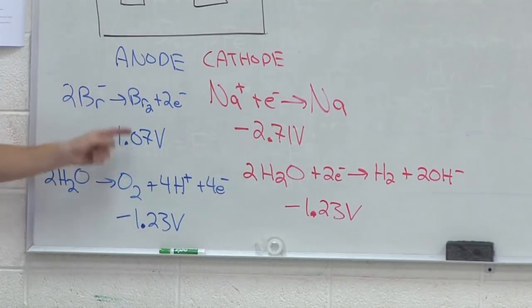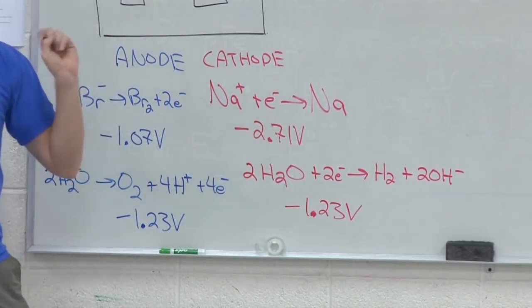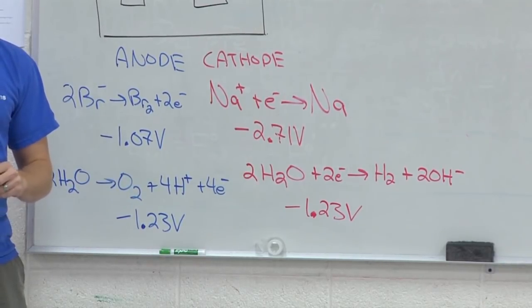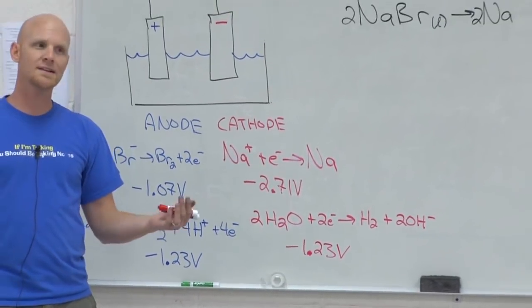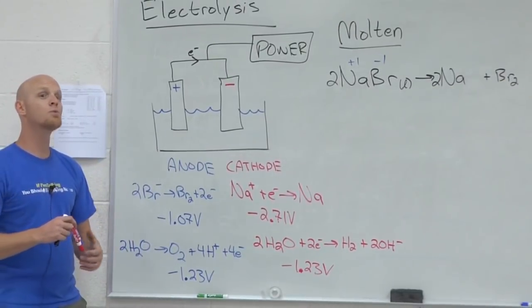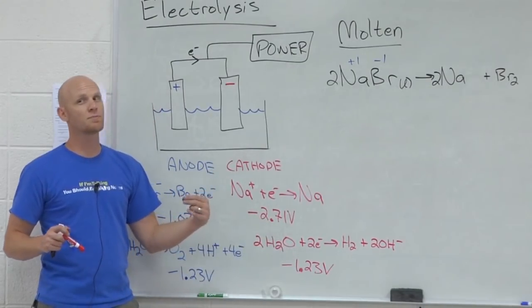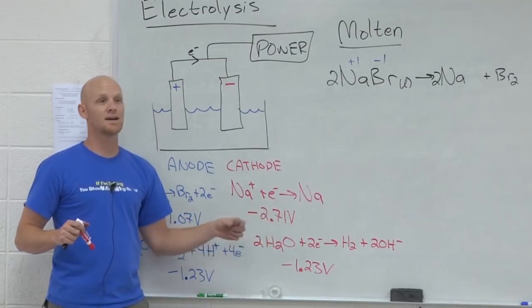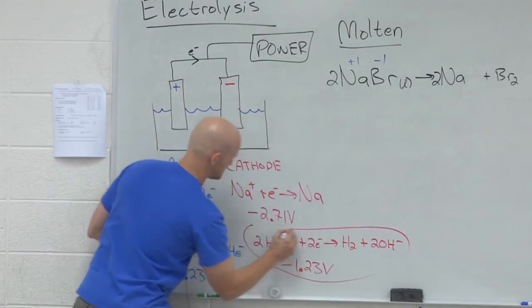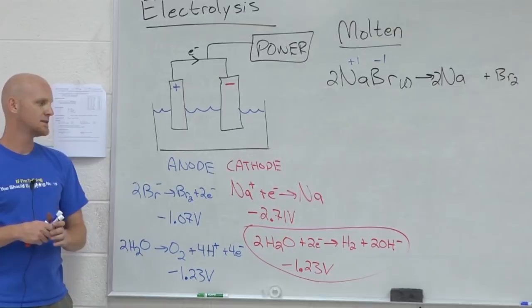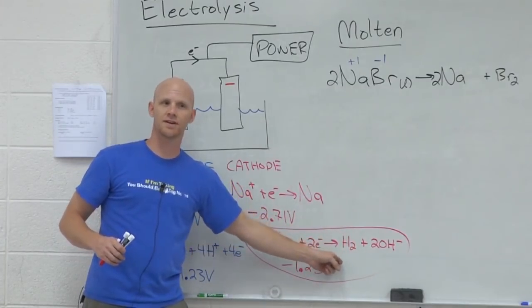Okay. So now we have our two possible oxidations that could happen at the anode. And we have our two possible reductions that could happen at the cathode. But again, only one of each is actually going to happen. Whichever one is easier. And when I say easier, I either mean whichever one is more spontaneous, or at least less non-spontaneous, if you will. Whichever one is more positive in voltage. So let's look at our cathode first. Which one of these numbers is more positive? And notice more positive means the same thing in this case as being less negative. So which one of these is actually easier? The water. Yeah, the water. Water is way easier. Sodium doesn't get produced at all with aqueous electrolysis in this case.